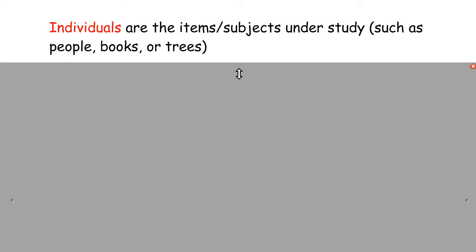First of all, we're going to look at individuals. These are the things, the nouns, the items, or the subjects under study. So for example, if you have a bunch of people in your study, those are the individuals. Or if you're studying trees or books or dogs, whatever it might be, those are the individuals, the nouns that participate in your study.